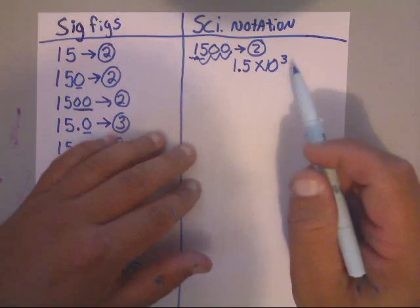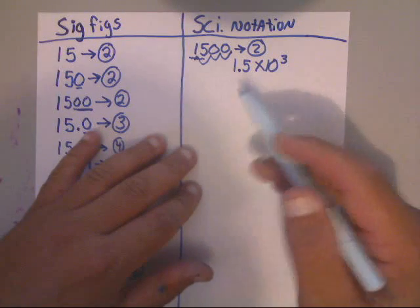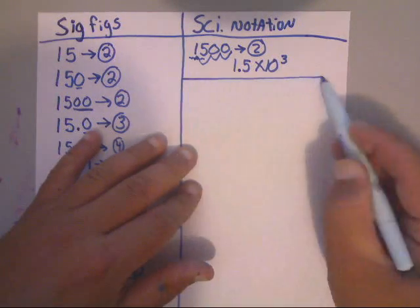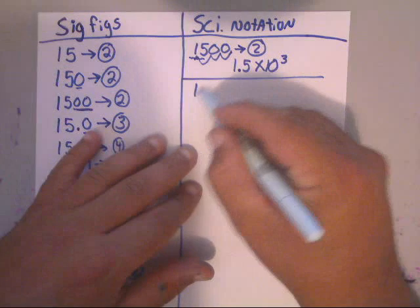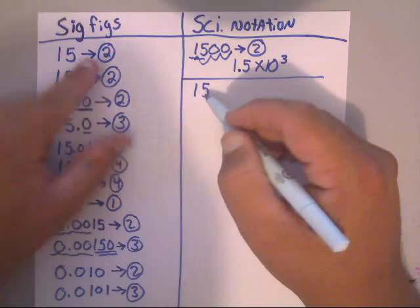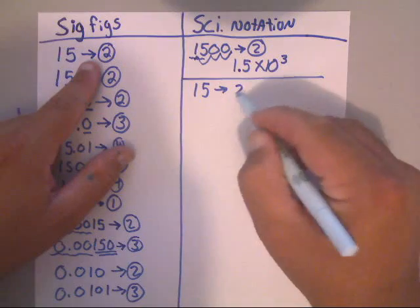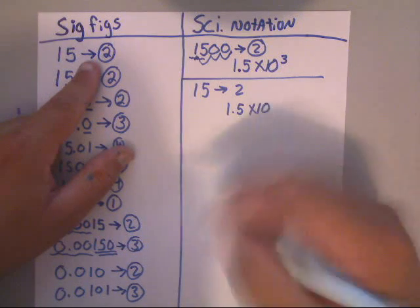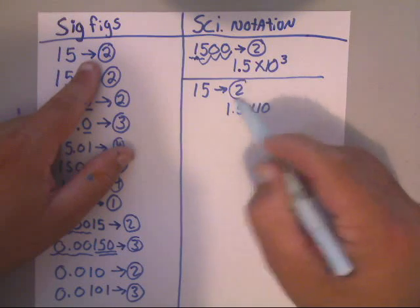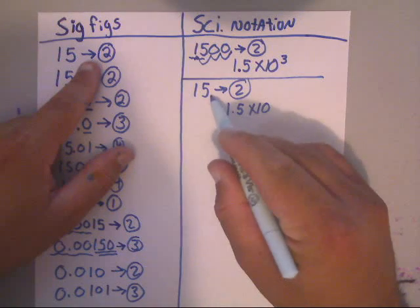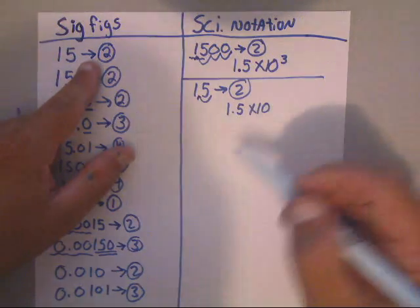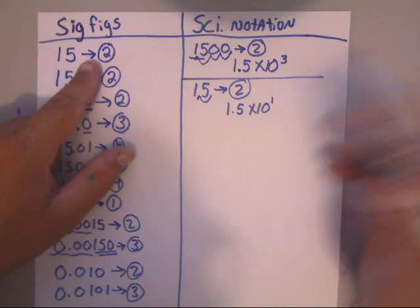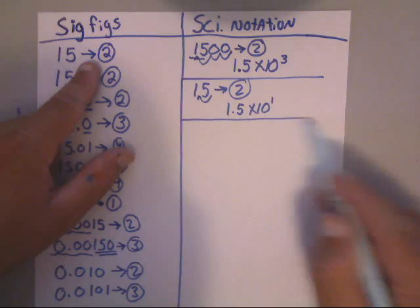It's a positive 3 because it's a big number, meaning it's 1 or more. For example, we had the number 15 earlier — it was two sig figs. So you'd write 1.5 times 10, and since it's 1 or more, you look at how many times you moved the decimal — you moved it from there to there, which is one swing, so that would be to the power of 1.